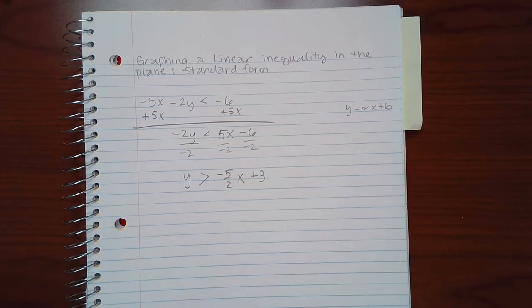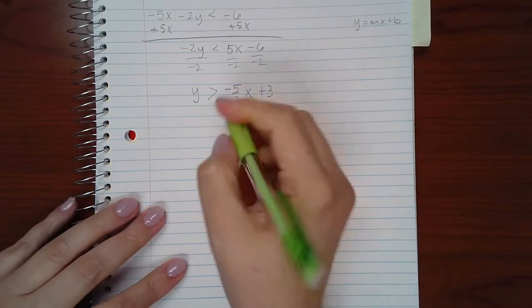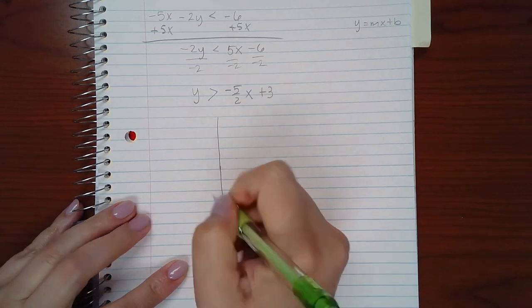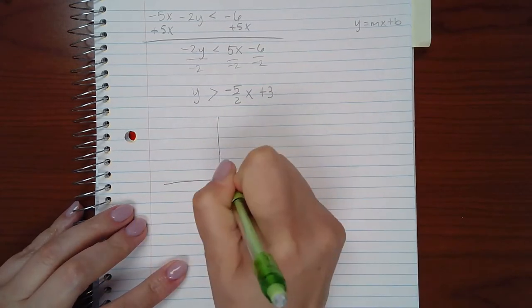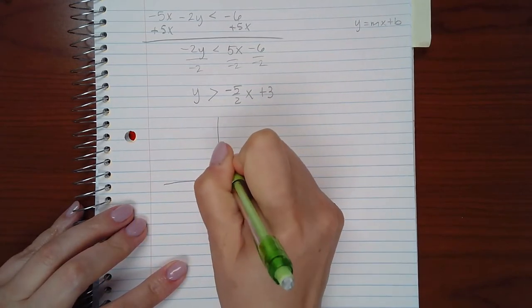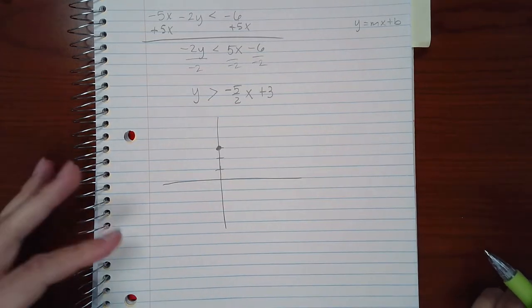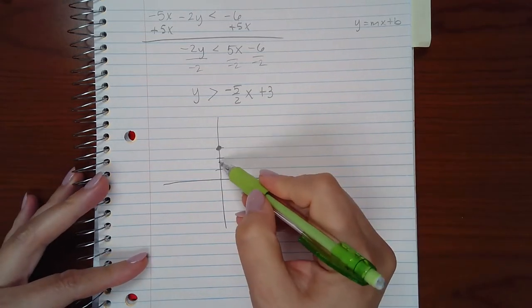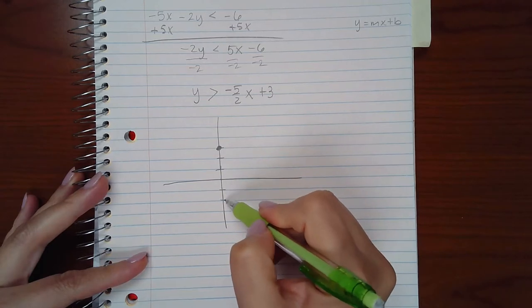So I can graph the line like normal. I begin with the y-intercept one, two, three, and then I start to move according to my slope. So decrease one, two, three, four, five and move over to the right two units. My second point is here.